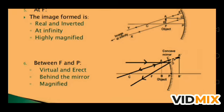If the object is between focus and pole, the image forms behind the mirror. It becomes erect and bigger than the object. So the image formed by the concave mirror when the object is between F and P: the image is virtual, erect, behind the mirror, and magnified.